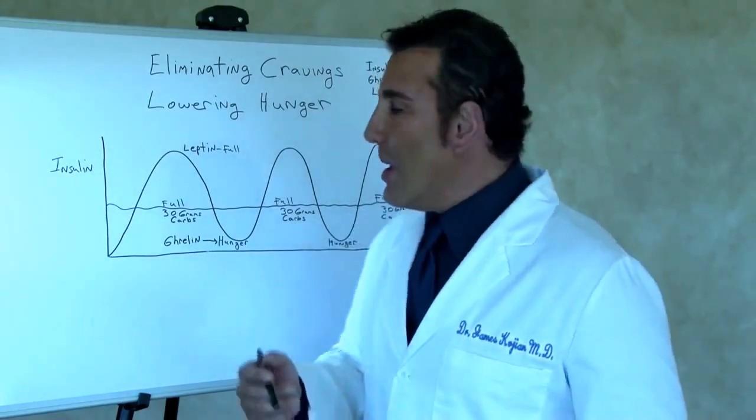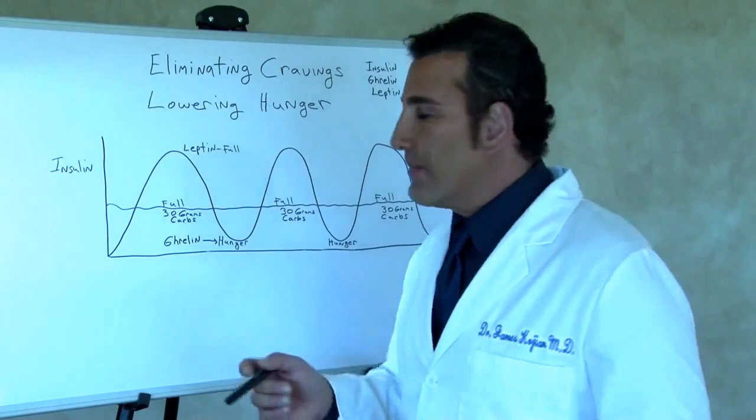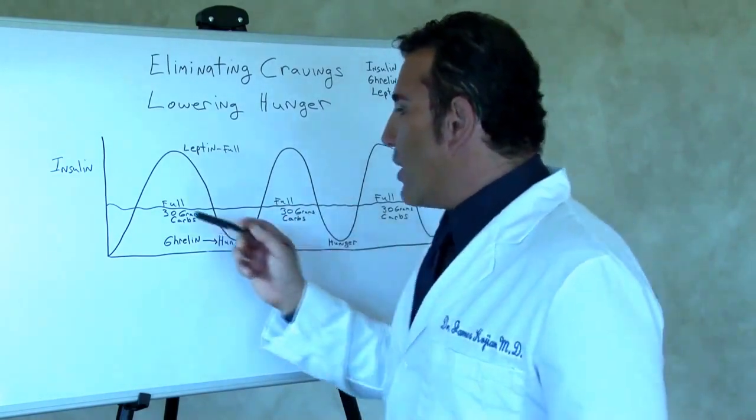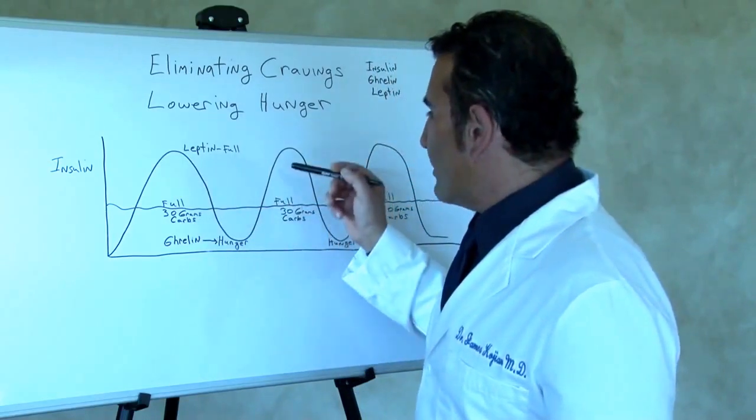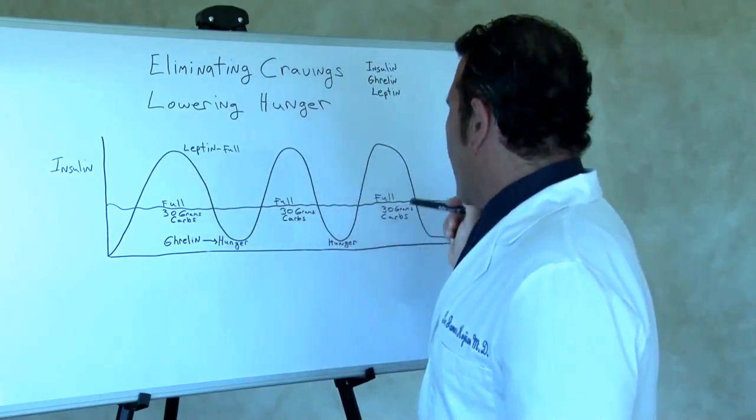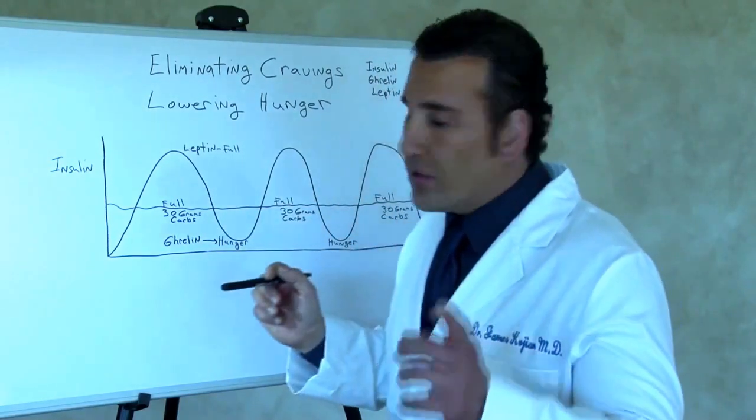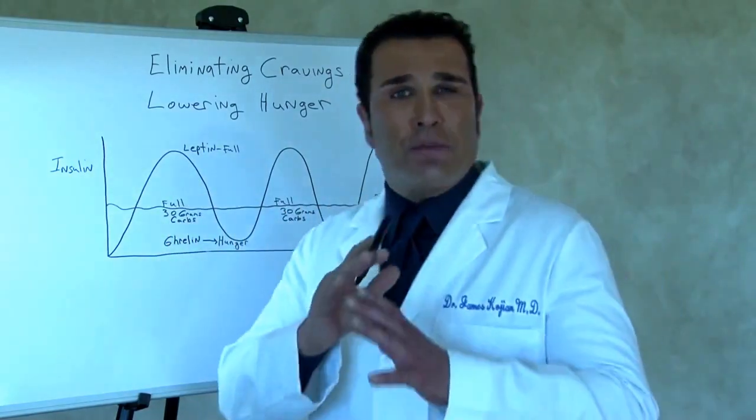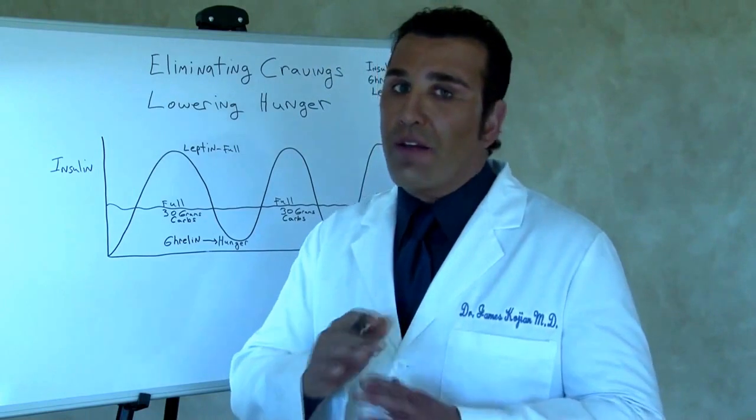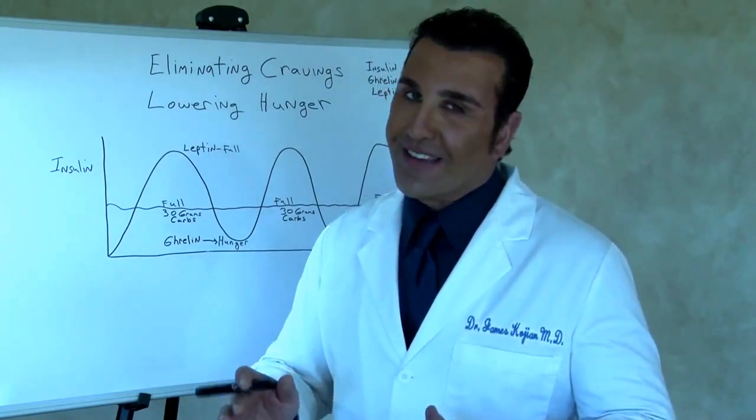So protein, vegetables, and berries for fruit. Try to decrease your pasta, your bread, the muffins as much as possible because the best way to eat is three meals a day, 30 grams of carbs for breakfast, 30 grams of carbs for lunch, and 30 grams of carbs for dinner. This way your insulin level will stay flat and you'll have much less hunger and very little food cravings. Thank you.